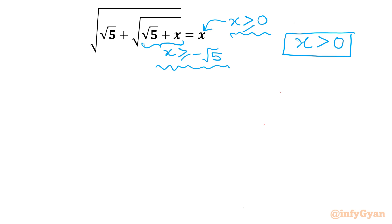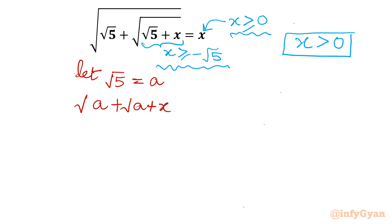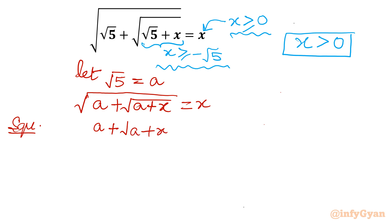Now let's begin the problem by considering a substitution. The substitution is not root 5 plus x equals y; instead, our substitution is root 5 equals a. So our equation becomes the square root of a plus the square root of a plus x, equals x. Now squaring both sides gives us a plus the square root of a plus x equals x squared. Rearranging terms: x squared minus a equals the square root of x plus a.